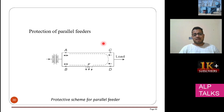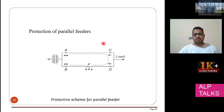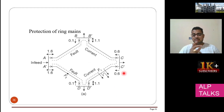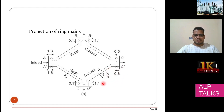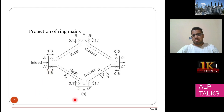For the protection of parallel feeders, where two feeders are present, when a fault occurs at F, both relays B and D will operate. Sometimes a ring main unit is also used. For the ring main, if fault F1 occurs, relays C' and D' operate. If fault F2 occurs, relays D and A' operate.